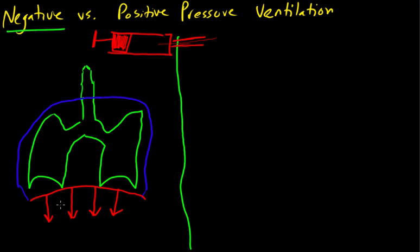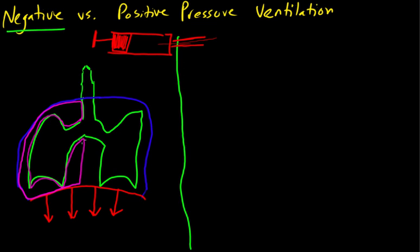Same thing with the lungs. Our diaphragm is going to pull - kind of like pulling the stopper on a syringe - creating a negative pressure within our lung space. What that's going to do is expand our lungs. Now let's introduce another topic here. We're going to have a pink layer enveloping our lungs, and a pink layer enveloping our chest wall. We have something called the pleura.